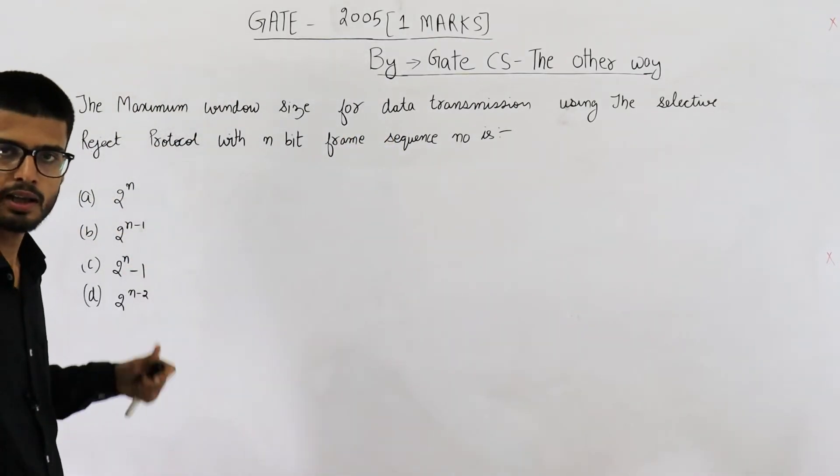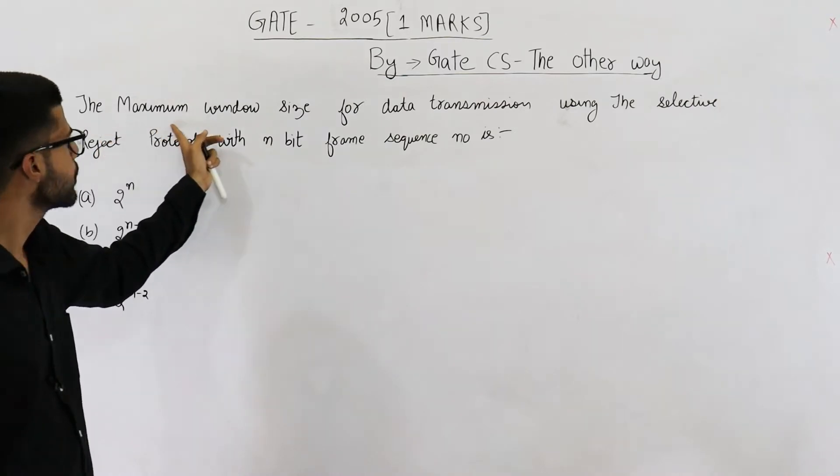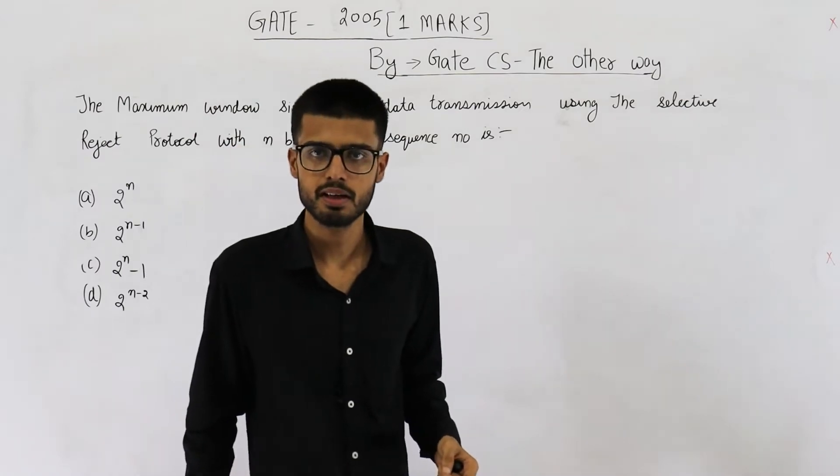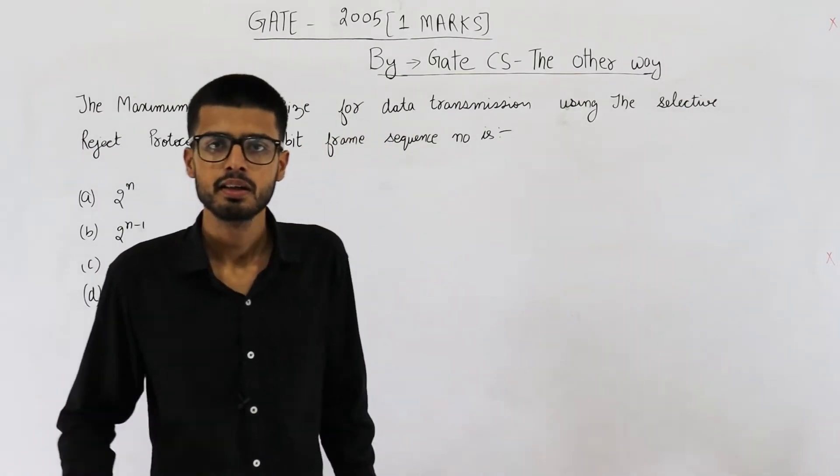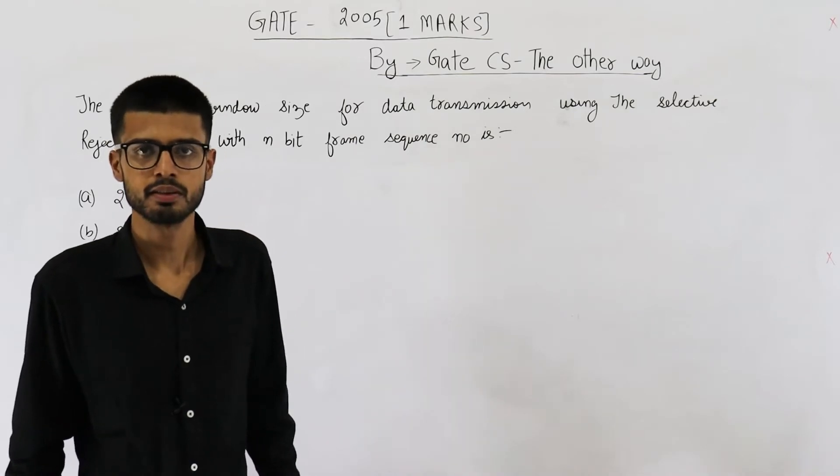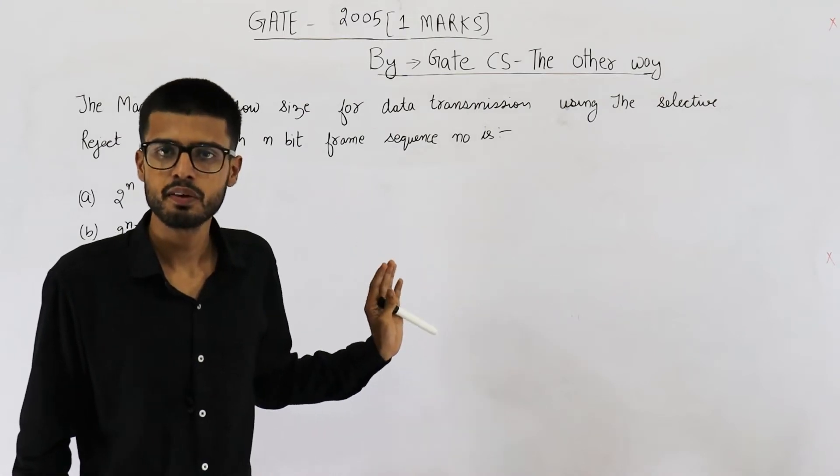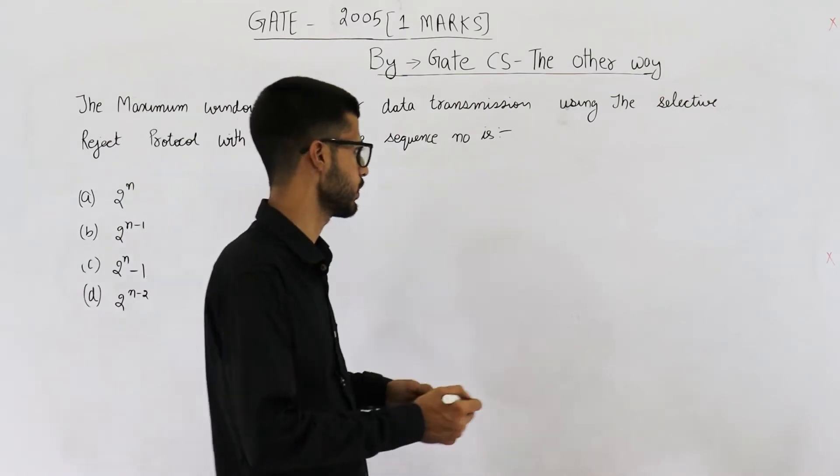So this is from the same topic that we just now studied. Also they are asking the maximum window size. Which window are they talking about? Is it the receiver window or the sender window? See in selective repeat or selective reject, receiver window size is equal to the sender window size. That means whatever window they are talking about we can just find out for sender because anyway sender and receiver window size will be equal.